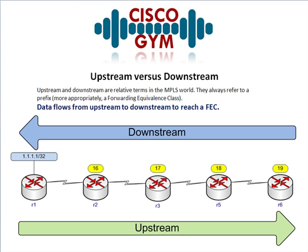This upstream/downstream concept appears in Cisco's documentation and may appear on the exam. It's not a hard concept, but the fact that it's relative is what throws you off. Let's assume all these routers are running MPLS. R1 has a directly connected route — say 1.1.1.32. In normal MPLS operations, it assigns a local label and advertises it via LDP to R2. R2 learns label 16 from R1, assigns its own local label 17, and advertises that to R3, and so on.